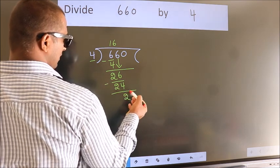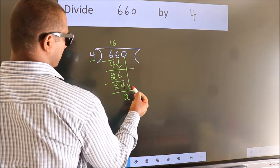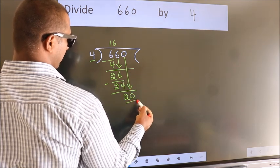After this, bring down the beside number. So, 0 down. So, 20.